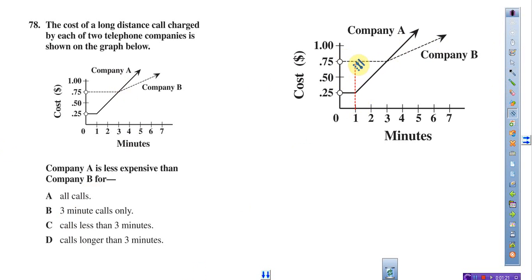For one minute, option B is more expensive than option A. Option A is the solid line, option B is the dashed line. At minute three, they're exactly the same. At minute five, they're the same again.